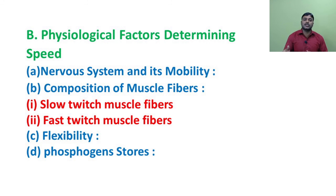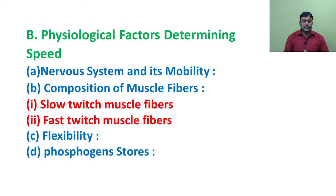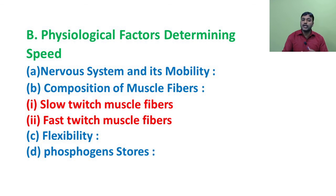The physiological factors determining speed include: nervous system and its mobility, composition of muscle fibers, flexibility, and phosphogen stores. To generate more speed, muscles have to contract and relax at maximal speed. These actions are possible when motor impulses are sent from the central nervous system. The speed of a person largely depends on the mobility of the nervous system.